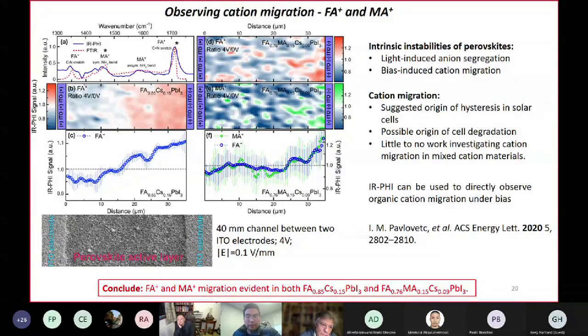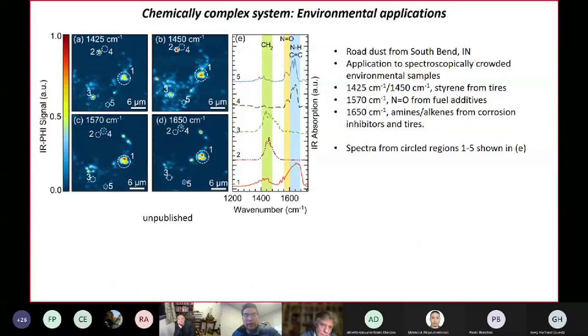Quickly, chemically complex systems, environmental applications, we can look at road dust in South Bend, Indiana. This is more of an analytical chemistry application with some colleagues in civil and environmental engineering. You can look at different transitions related to styrene from tires, fuel additives, things in tires and corrosion inhibitors, and so forth. I just want to highlight the fact that we're chemically specific.